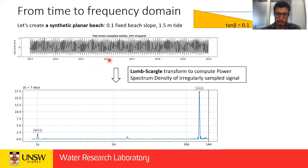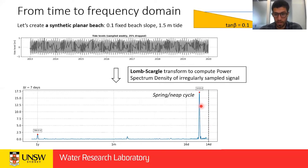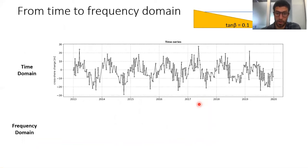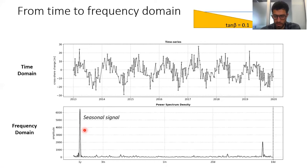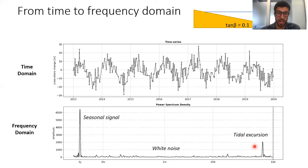For example, if we compute the power spectral density of the subsampled tides — sampling at seven days, Nyquist limit 14 days — the first peak is the spring-neap cycle at 14.8 days, and then we also have a solar annual signal. Looking at the synthetic shoreline time series in the frequency domain: the main peak is seasonality at one year, then white noise with equal energy at all frequencies, and a very interesting peak at 14.8 days which is our tidal excursion signal.